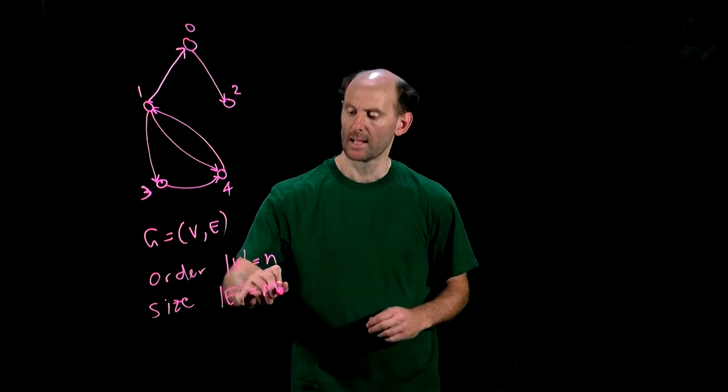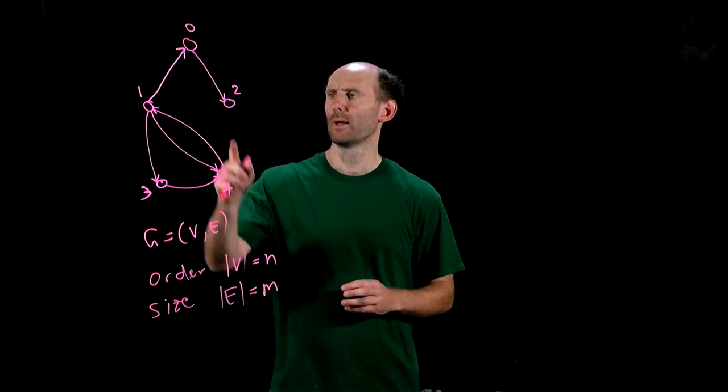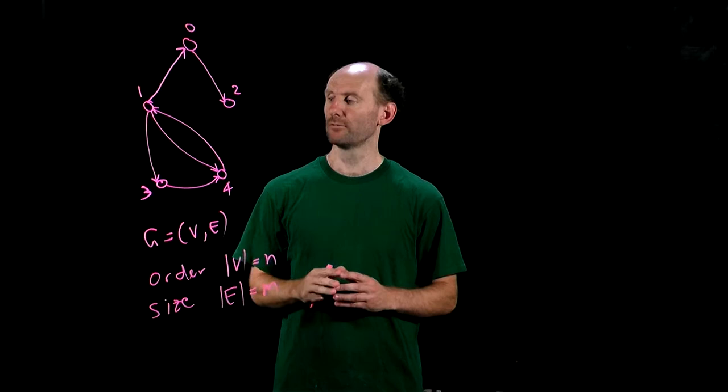In our example here we have 1, 2, 3, 4, 5 nodes so the order is 5, and we had 6 arcs so M the size is 6.